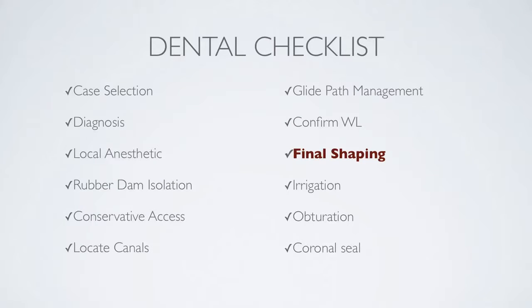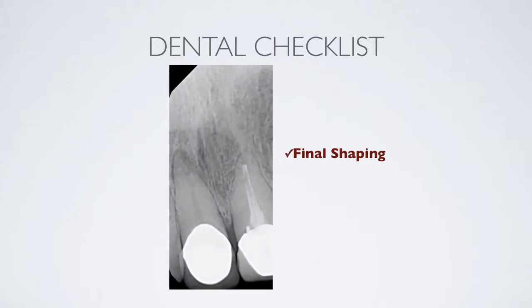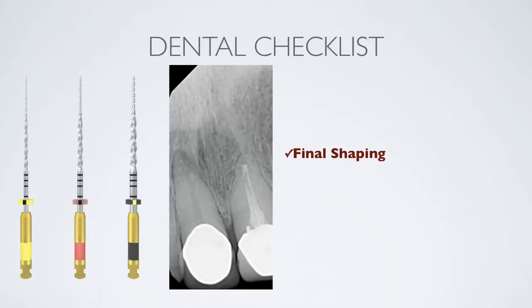There are many choices of files and techniques available. For this case I decided to use the Wave 1 file because of its simplicity. Due to the size of the canal, the large Wave 1 file was used, which can be seen here with a black stripe.